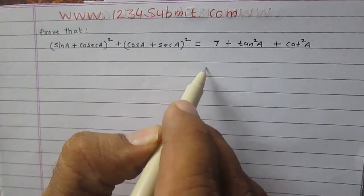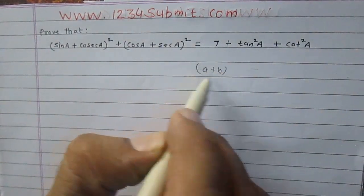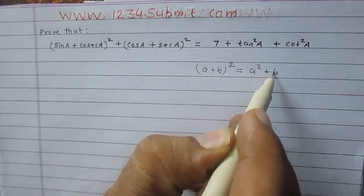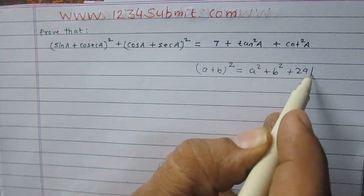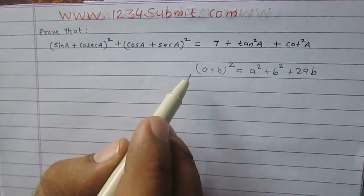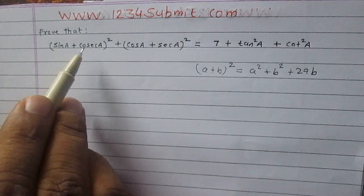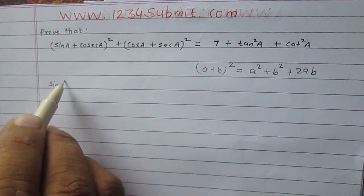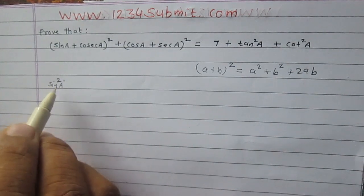By using identity (a plus b) whole square is equal to a square plus b square plus twice of ab, we can expand (sin a plus cosec a) whole square as sin square a plus cosec square a plus twice of sin a cosec a.